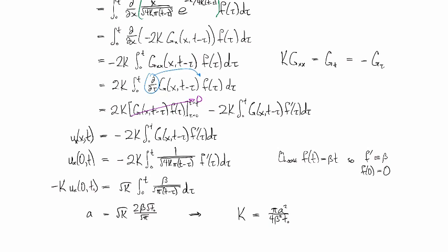And so that's how we can figure out what the diffusivity is by taking a measurement. So we just increase the heat at one end of the bar steadily at rate beta, and then compute it using this formula.